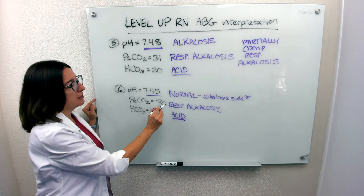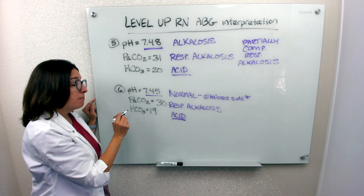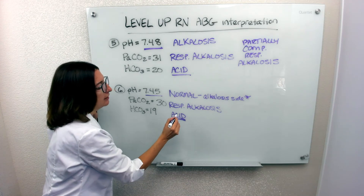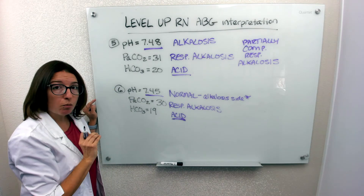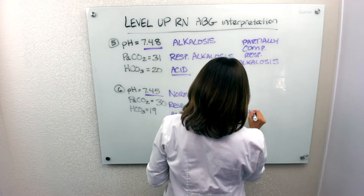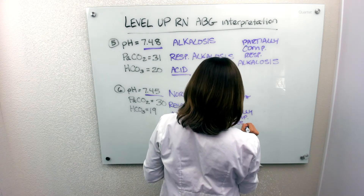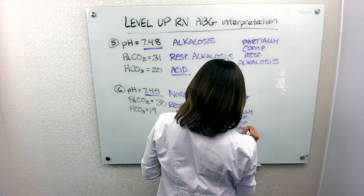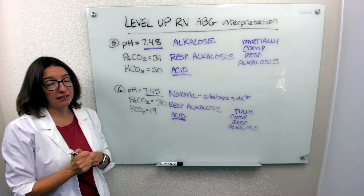The respiratory system was acting out, causing this alkalosis, and the metabolic system came in and saved the day — became more acidic to help compensate — and was able to bring that pH into normal range. So we have fully compensated respiratory alkalosis. That's problem six.